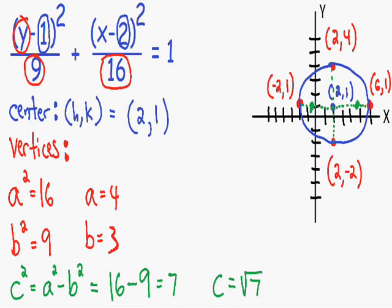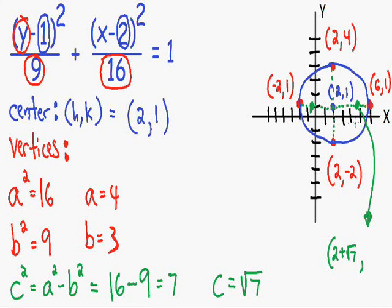Now we have plotted our foci. For the exact coordinates: the center is at x coordinate 2, and the right focus is the square root of 7 units to the right, so its x coordinate is 2 plus the square root of 7, and the y coordinate is 1. For the left focus, the x coordinate is 2 minus the square root of 7, and the y coordinate is also 1.